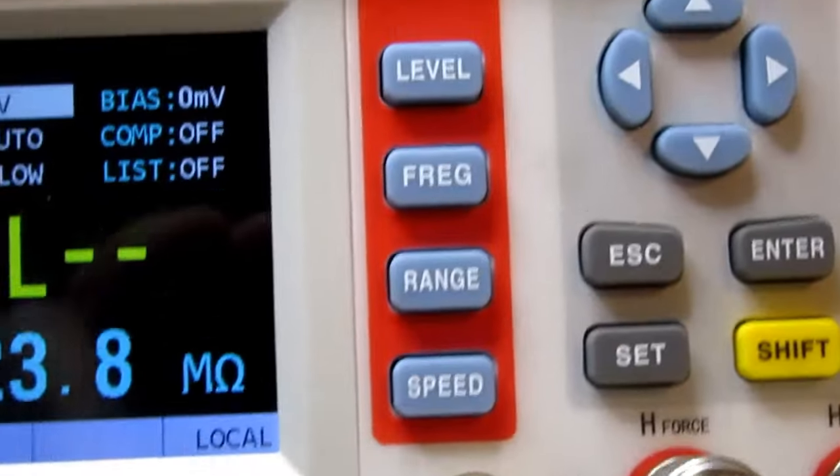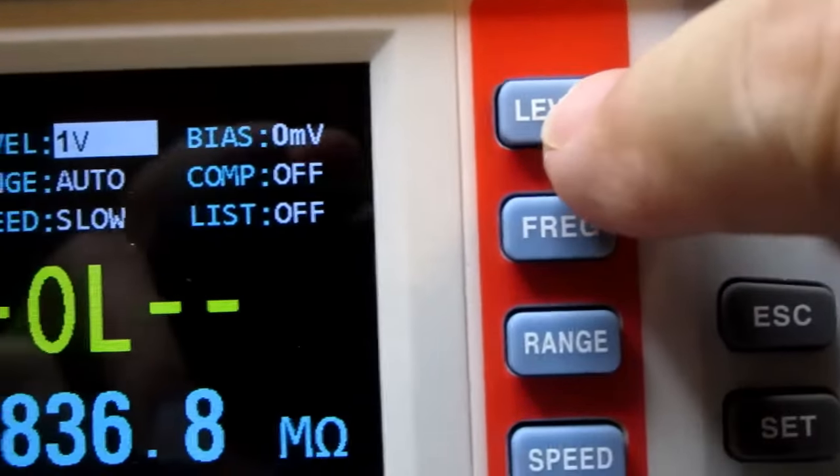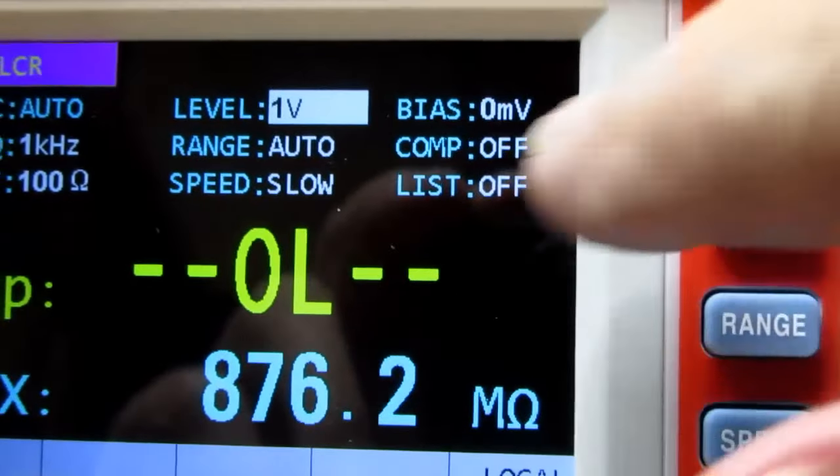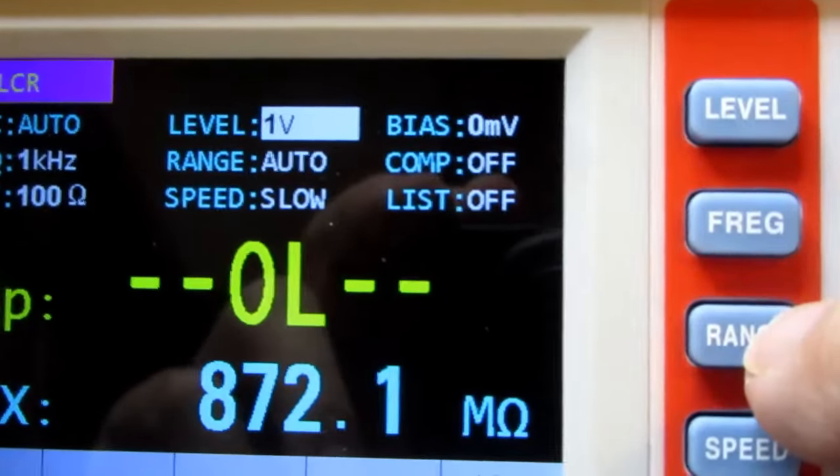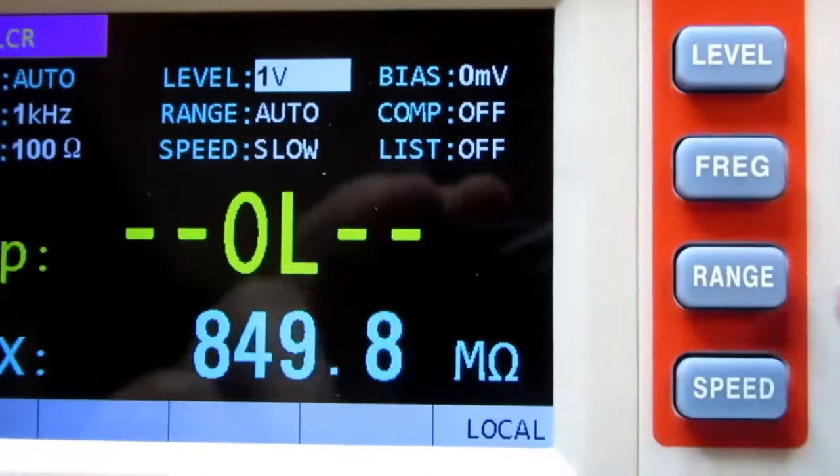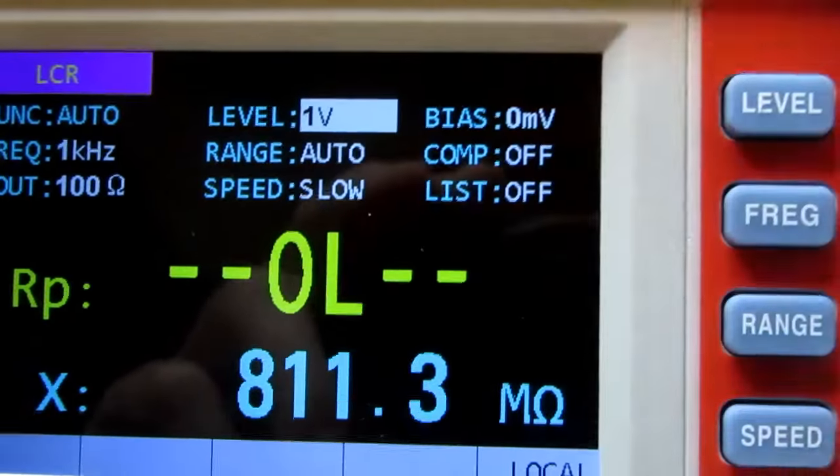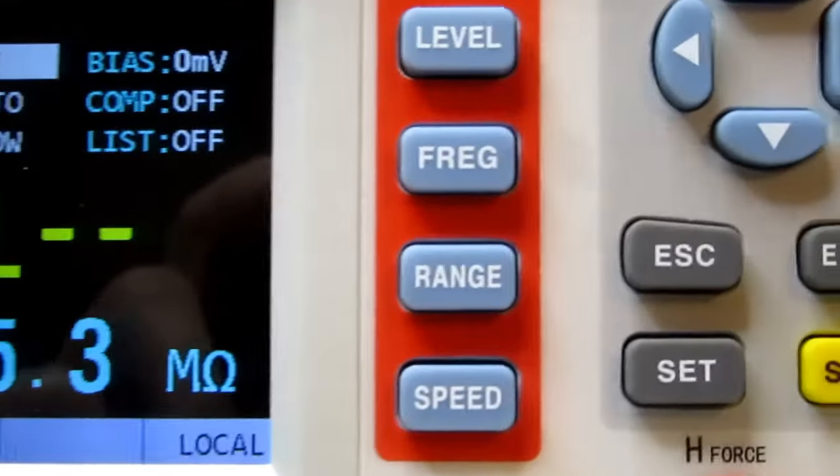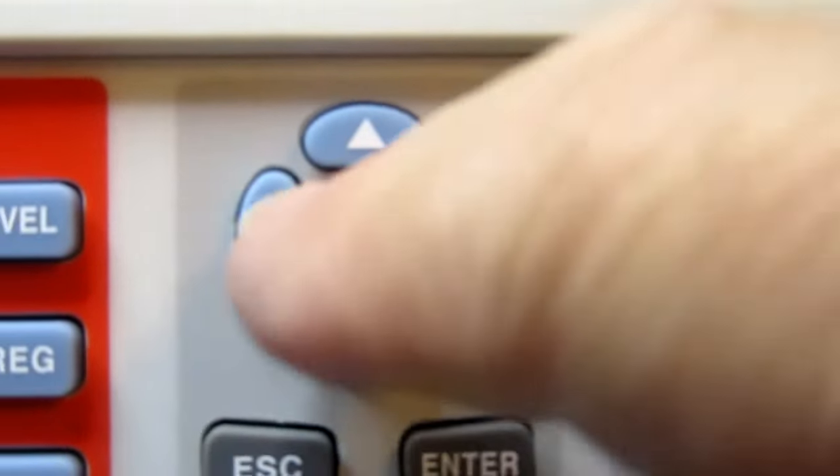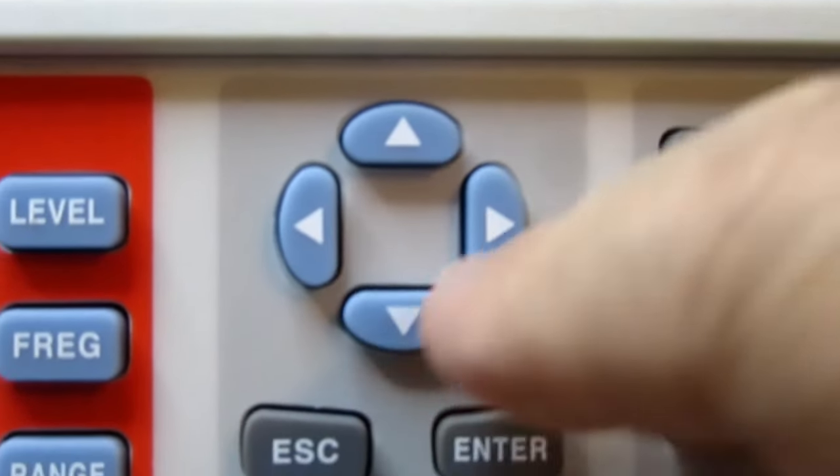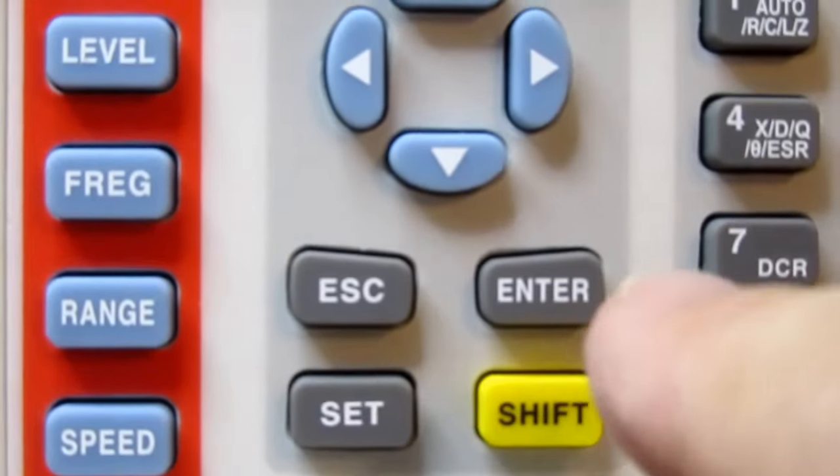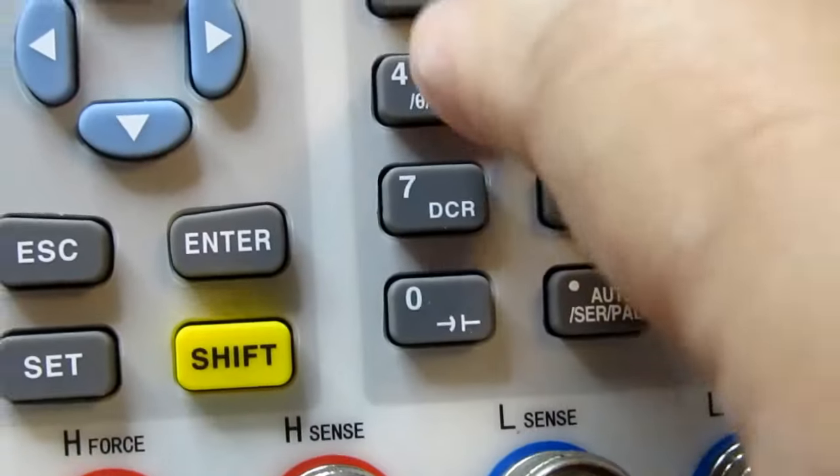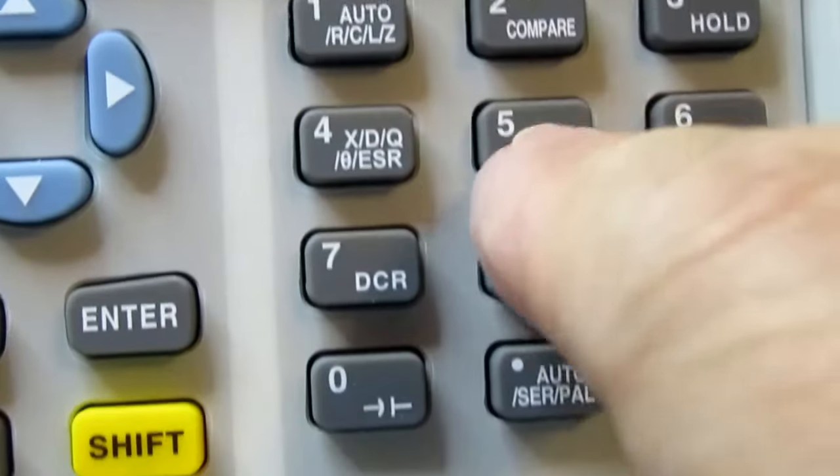Let's look at the buttons. I can change level. I can change the frequency. I can change the range. I can change the speed. To go further into it I would have to use some of the other functions. There's navigation buttons to select and change value. An escape and enter. A set and a shift. I think the shift are used for these buttons that have more than one thing on them.